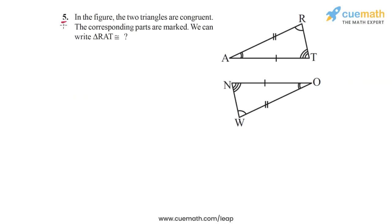In question 5 of this exercise, the problem statement says that in the figure that you see on the right, the two triangles are congruent. The corresponding parts are marked. We can write triangle RAT congruent to what?